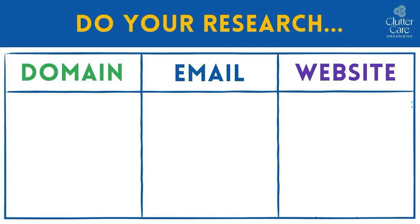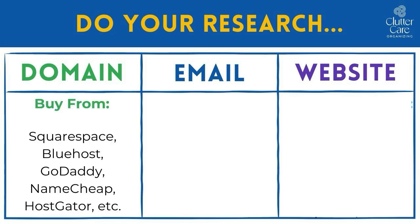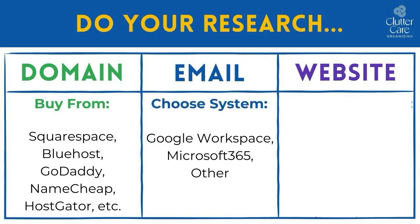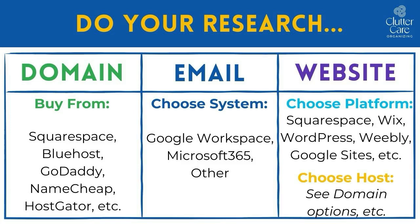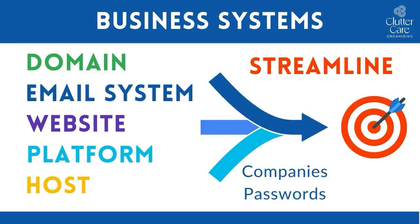Places where you could purchase a domain name include companies such as Squarespace, Bluehost, GoDaddy, Namecheap, HostGator, and more. Email systems generally include Google Workspace plus a whole bunch of other apps, or Microsoft 365 plus the apps that come with that. There are also other email providers that are separate. When you go to create your website, you need to choose a platform such as Squarespace, Wix, WordPress, Weebly, Google Sites, or others. Many of these same companies can also be your website host, but again, you need to do some research. Your goal in choosing your business systems should be to combine as many of these items as possible into as few systems as possible so that you are streamlined and have fewer logins and passwords to keep track of.